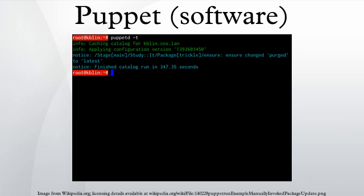Puppet discovers the system information via a utility called FACTOR, and compiles the Puppet Manifests into a system-specific catalog containing resources and resource dependency, which are applied against the target systems. Any actions taken by Puppet are then reported.